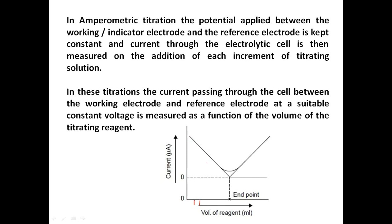When the electrolytic species is removed, there is a change in current, and this change corresponds to the equivalence point. Based on this curve, you can determine the concentration of the electrolytic species. The current passing through the cell between the working and reference electrodes at a suitable constant voltage is measured as a function of the volume of the titrating reagent — that is, volume of reagent versus current is plotted.